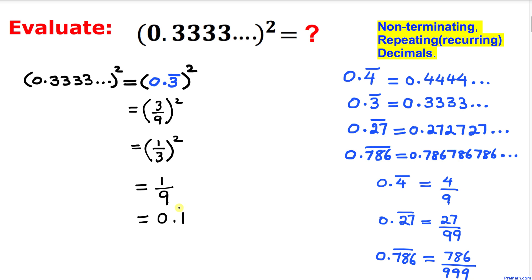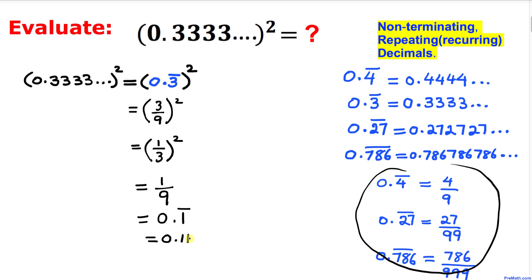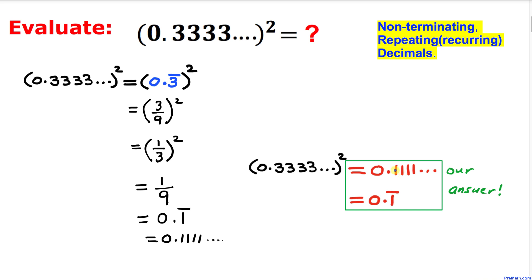By this definition, 1 over 9 can be written as 0.1 with a bar on top, or simply as 0.1111 going on and on. So our final answer is 0.111 all the way, or simply 0.1 with a bar on top. Thanks for watching, and please don't forget to subscribe to my channel for more exciting videos. Bye bye!